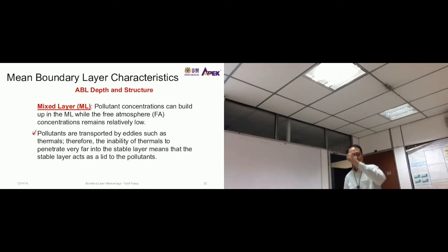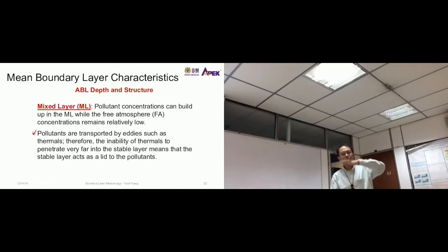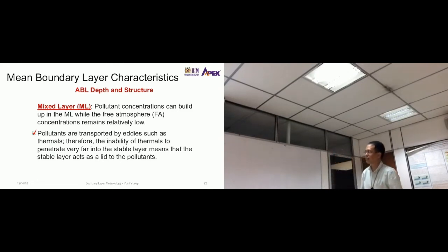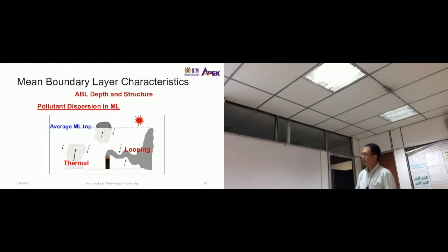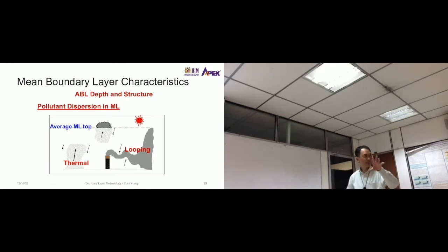With continuous emission into the mixed layer, pollutants become well-mixed but accumulate because the stable boundary layer above prevents upward movement. Pollutants are transported by eddies such as thermals, but the inability of thermals to penetrate far into the stable layer means the stable layer acts as a lid. If emissions continue, concentrations within the mixed layer start to increase.